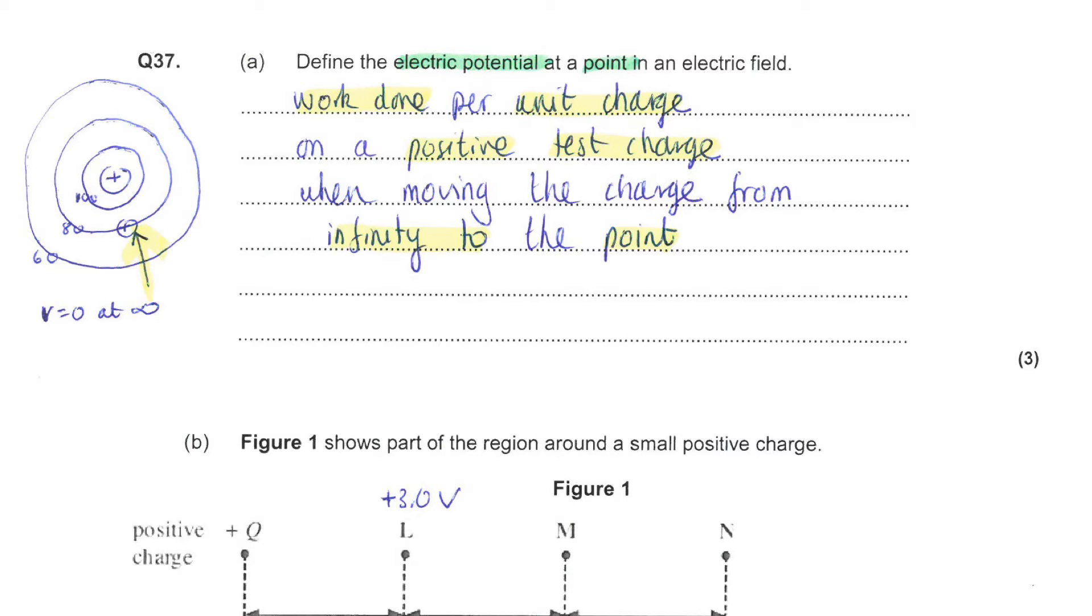So look at the example numbers I've given you and you should see that they are becoming increasingly positive as you get closer and closer to the central charge. So this is matching the wording in the definition that I've given here.